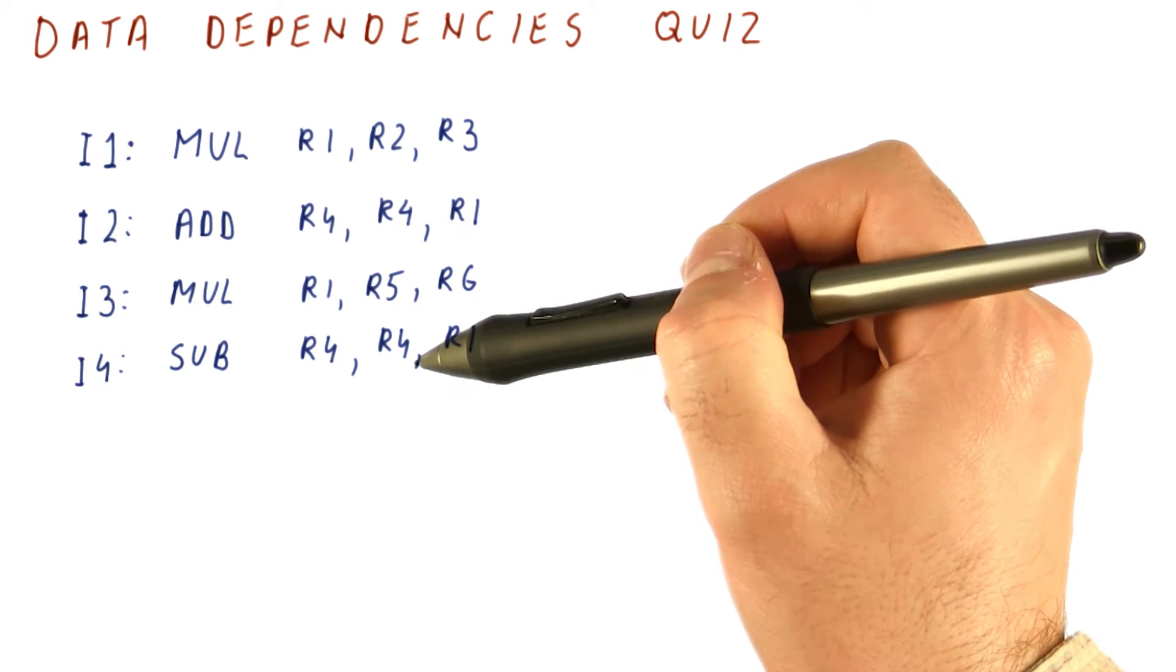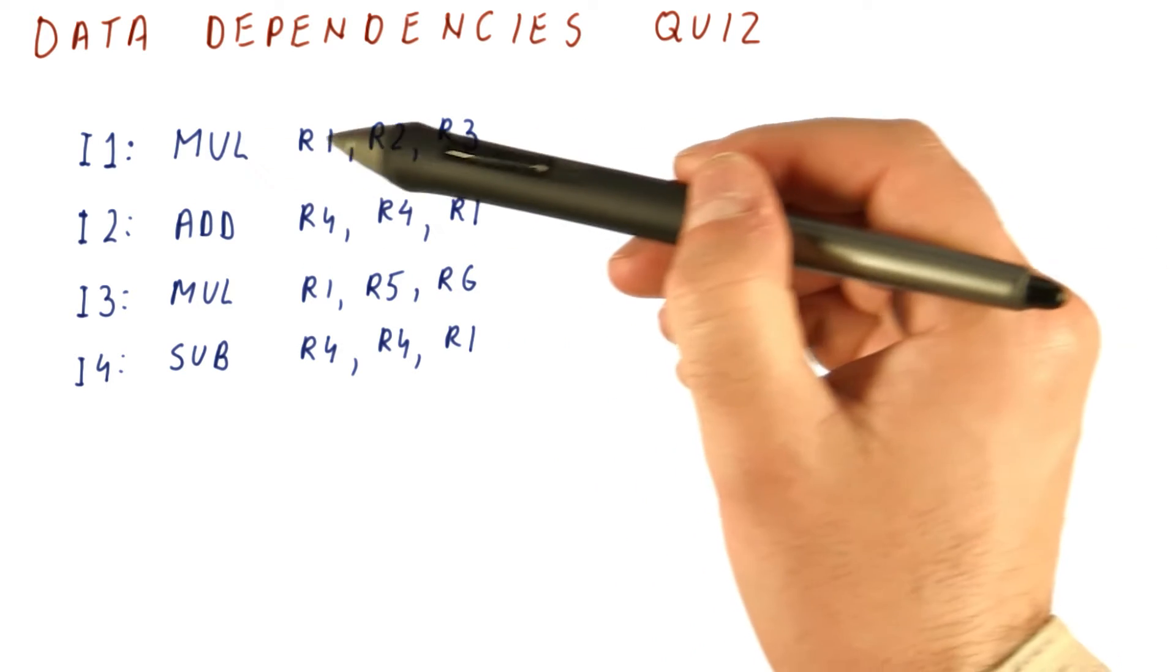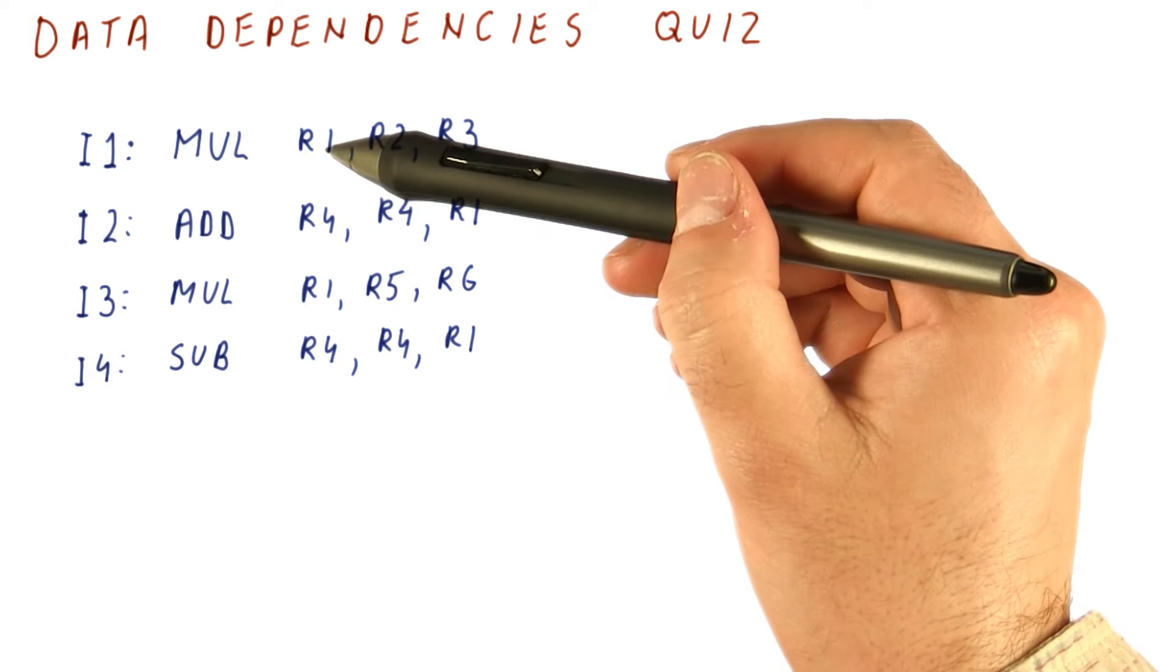Let's say that these are four instructions in our program. Instruction one multiplies R2 and R3, puts the result in R1.